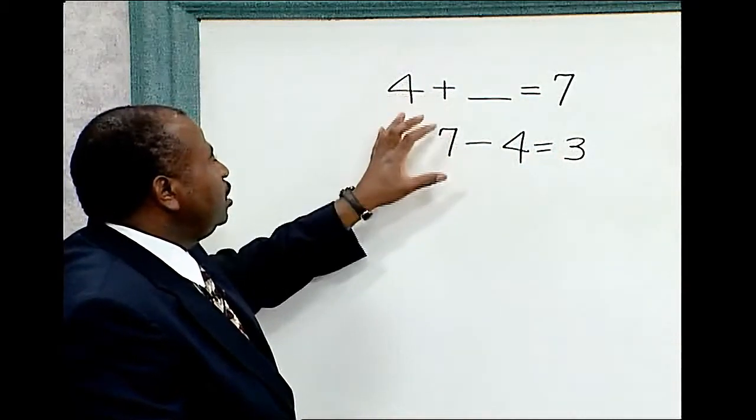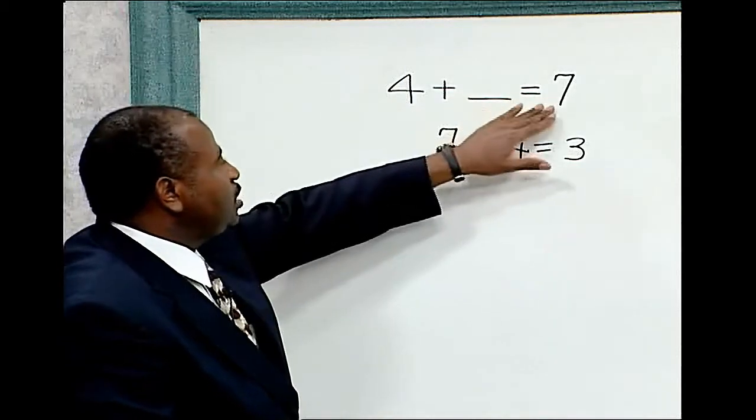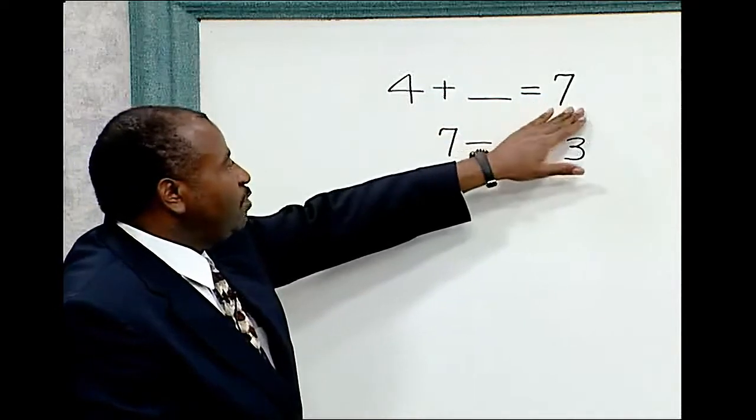Another way is to think of what number in your head when you add it to 4. What number when added to 4 equals 7? The answer is 3. 4 plus 3 equals 7.